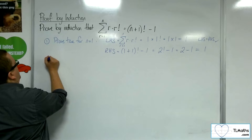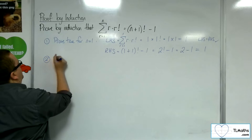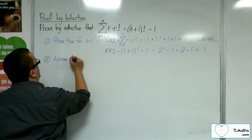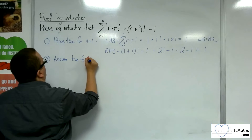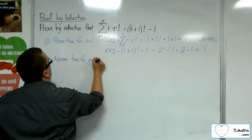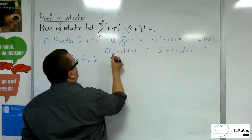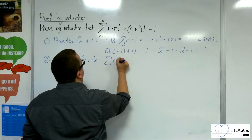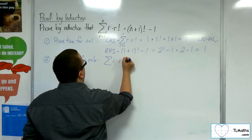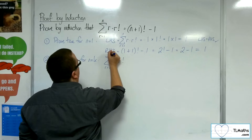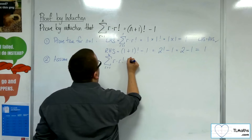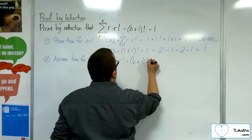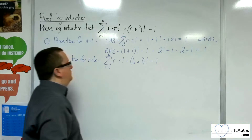Stage 2: assume true for N equals K. So substituting K into the sigma notation, the sum of R times R factorial from R equals 1 up to K is equal to K plus 1 factorial, take away 1.